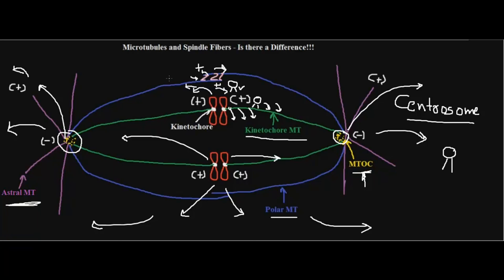So those are the three types of spindle fibers and how they pull chromosomes apart. Spindle fiber is nothing but microtubule itself — it is only one of the functions of microtubules. Subscribe to the channel for a new video every week.